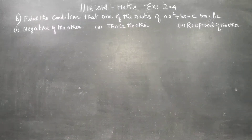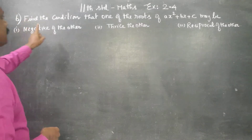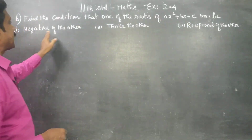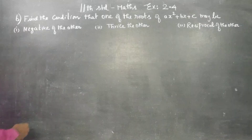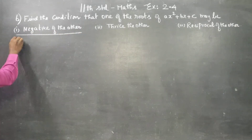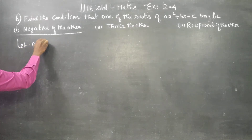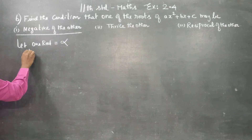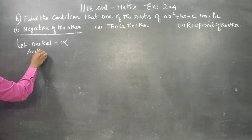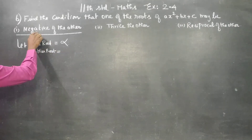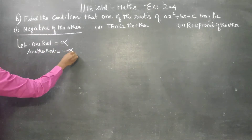Dear 11th standard students, in basic algebra exercise number 2.4, find the condition that one of the roots may be negative of the other. First, let one root be alpha, then the other root is negative alpha.